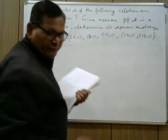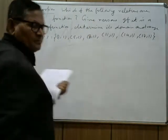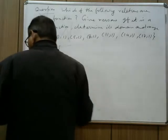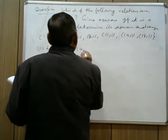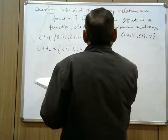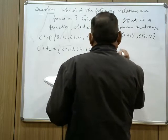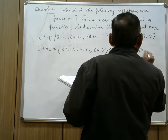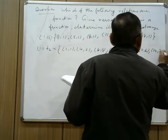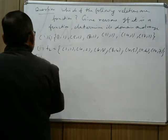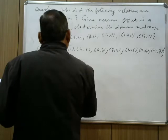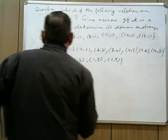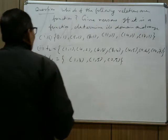The second relation f2 is defined as: {(1,4),(2,6),(3,8),(4,10),(5,12),(6,14)} — wait, let me restate: f2 = {(2,1),(4,2),(6,3),(8,4),(10,5),(12,6),(14,7)}. And the third relation f3 is defined as: {(1,3),(1,5),(2,5)}.